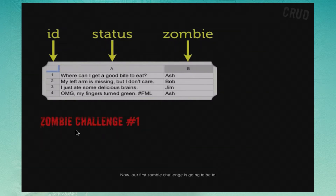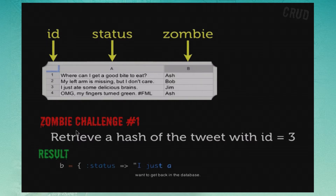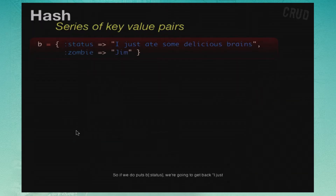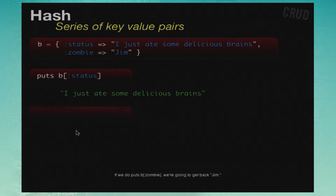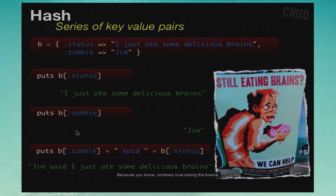Our first zombie challenge is to retrieve a hash of the tweet with ID equals three. I'm not going to show you the solution first — what I'm going to show you is the result, what we want to get back from the database. In this case, we want to get back a hash. If we do puts b status, we get back 'I just ate some delicious brains.' If we do puts b zombie, we get back Jim. Zombies love eating brains.